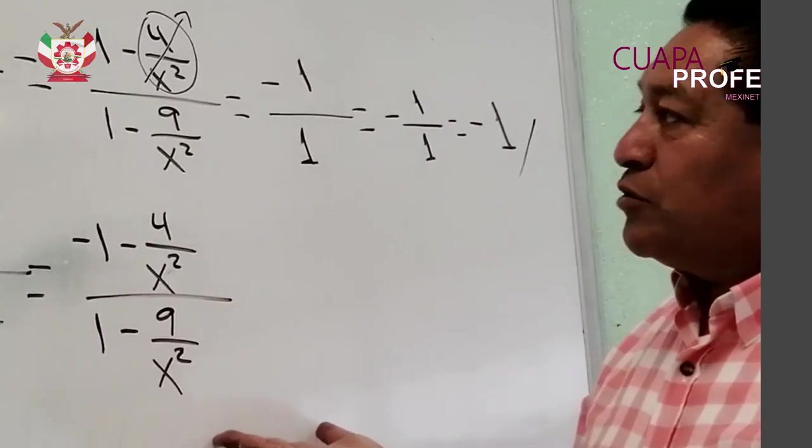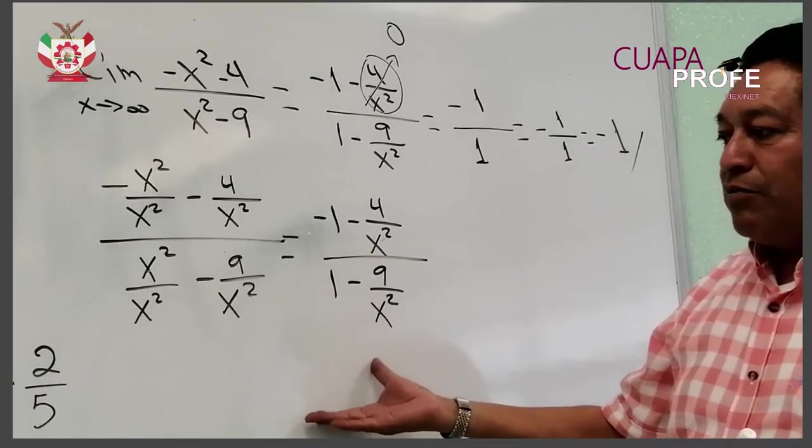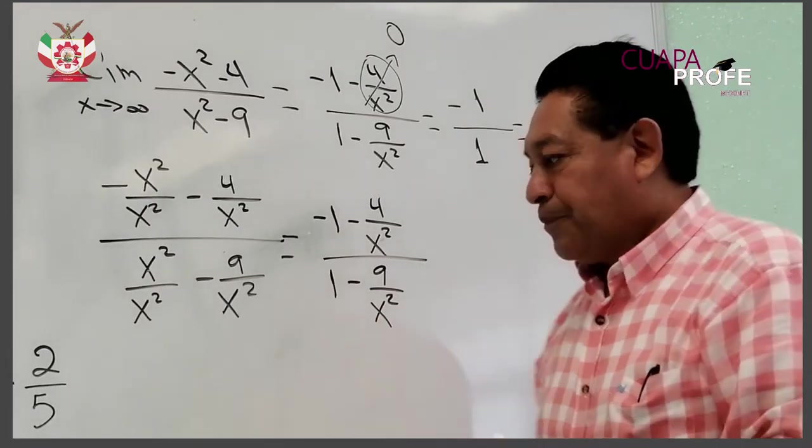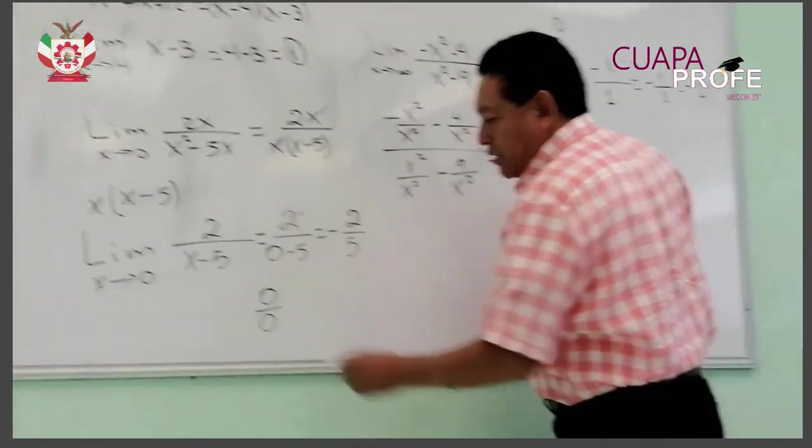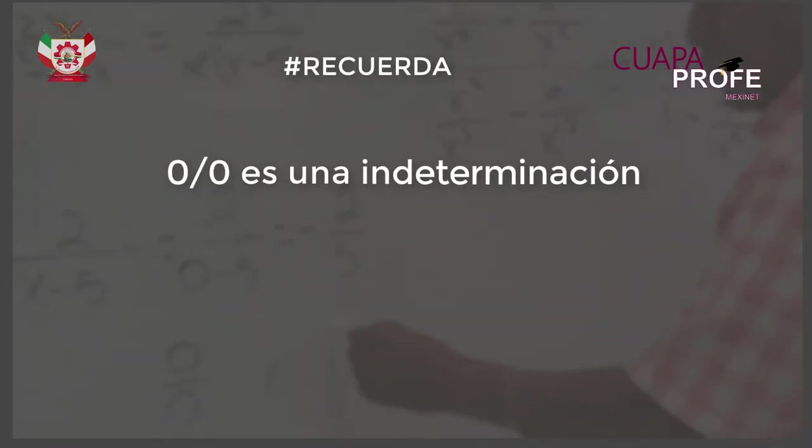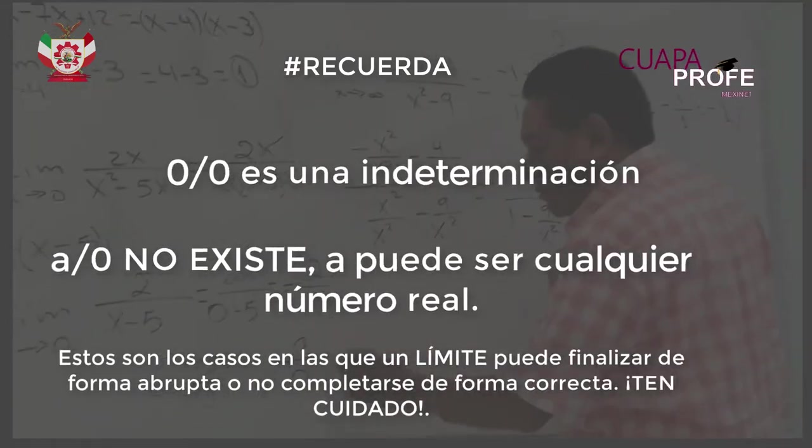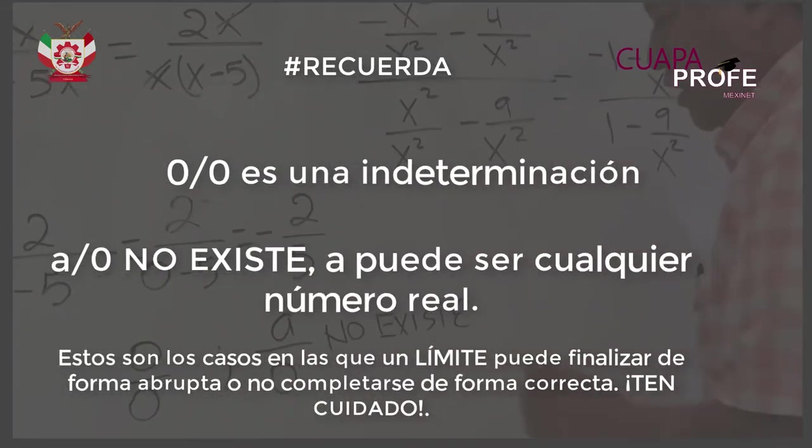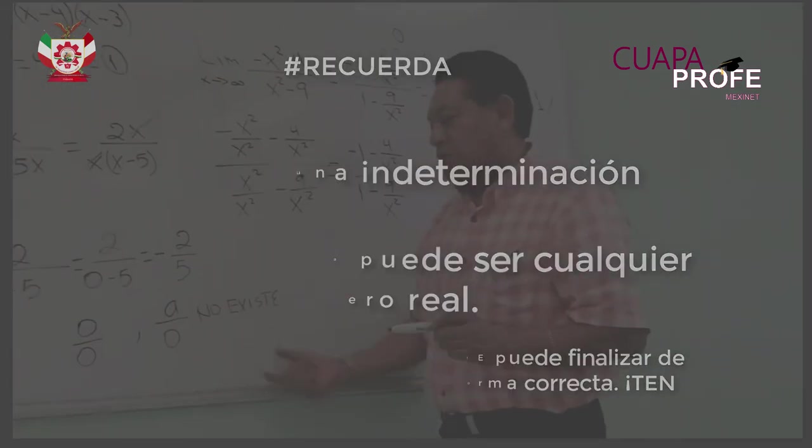Como podemos darnos cuenta, sí ya hay recomendaciones específicas para poder determinar los límites de una función cualquiera. No olvidemos que, si tenemos un cociente de 0 entre 0, es una indeterminación. Si tenemos un cociente de un número cualquiera, un número real entre 0, esto no existe. No podemos tener un cociente de un número real entre 0, esto no existe.